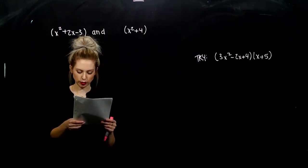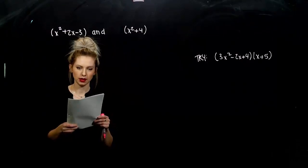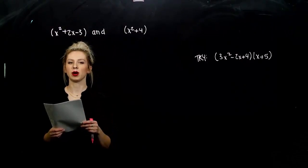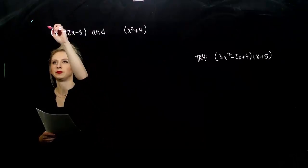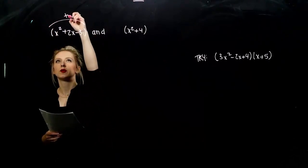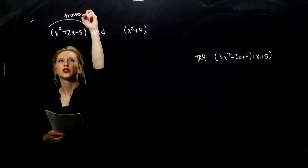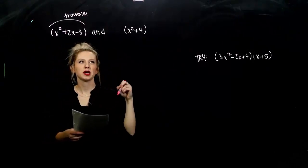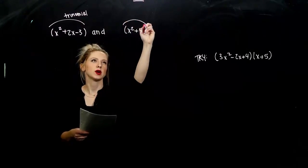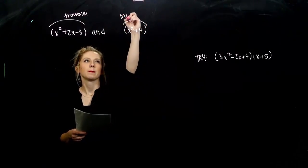We want to multiply x squared, plus 2x, minus 3. And, if we're going to classify that polynomial, what kind are we talking about here? This is a trinomial. It has three terms. And, what am I going to multiply it by? x squared, plus 4, which is a binomial.